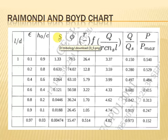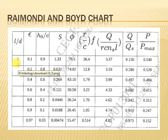We will discuss the Raimondi and Boyle chart in detail and then start the numerical problems. According to the SPPU syllabus, there will be a numerical on hydrodynamic bearing worth a minimum of 10 marks and maximum of 16 marks, and that numerical is completely based on the Raimondi and Boyle chart. You must know linear interpolation for solving these numericals.